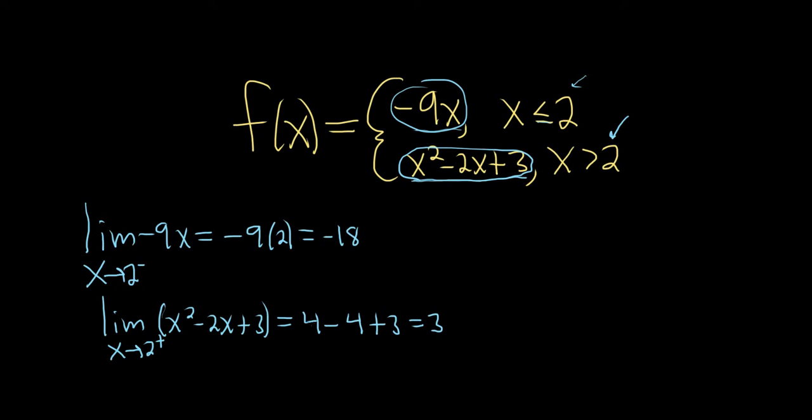From the left, we get negative 18. From the right, we get 3. Therefore, the limit as x approaches 2 of our function f(x) does not exist.